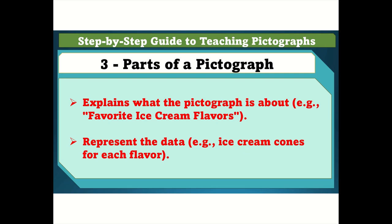Step three: parts of a pictograph. The title explains what the pictograph is about — for example, favorite ice cream flavors. The symbols represent the data, such as ice cream cones for each flavor.